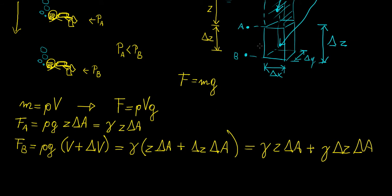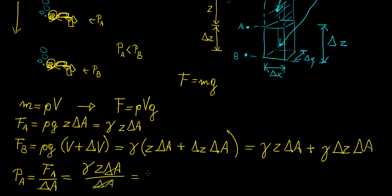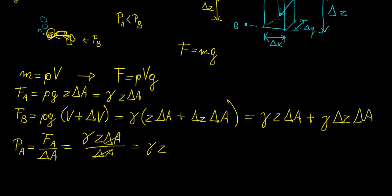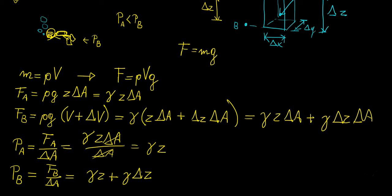Now we find the actual pressure at points A and B. Pressure at A is force A over the total area delta A, which gives us gamma z delta A divided by delta A — these cancel, giving us gamma times z. Similarly, pressure at B is the weight above B over the cross-sectional area, which comes down to gamma z plus gamma delta z. Hopefully you can see where this is going.